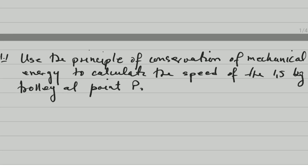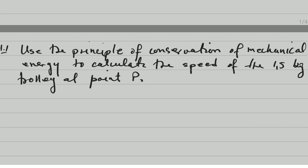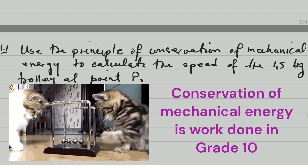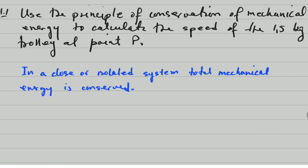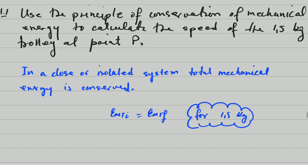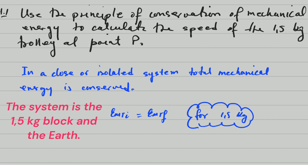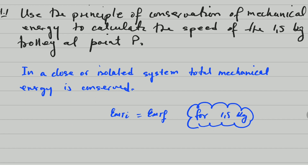Question 4.1 says: use the principle of conservation of mechanical energy to calculate the speed of the 1.5 kilogram trolley at point B. The principle states that in a closed or isolated system, total mechanical energy is conserved. So total mechanical energy initial equals total mechanical energy final. Mechanical energy equals kinetic energy plus potential energy.